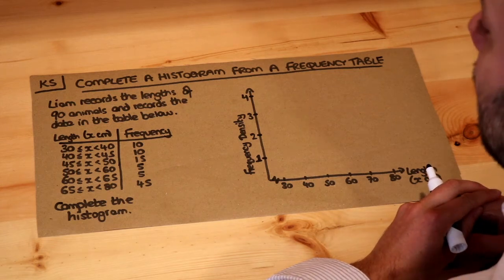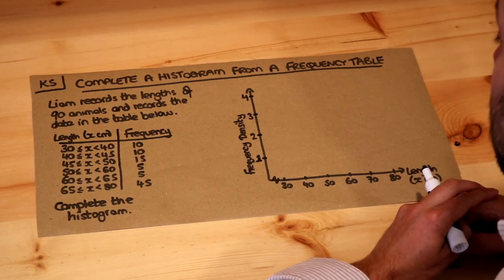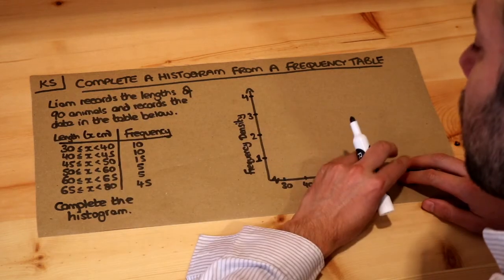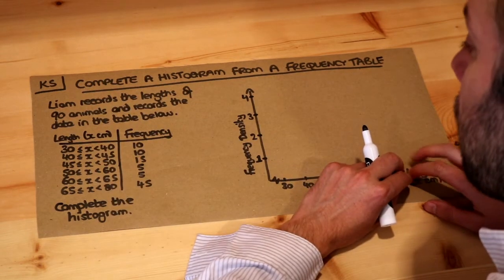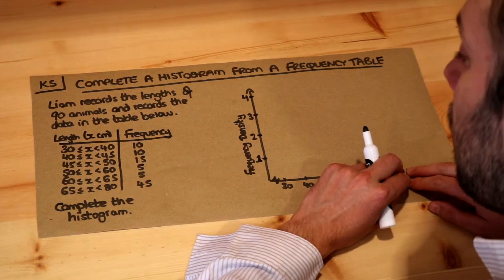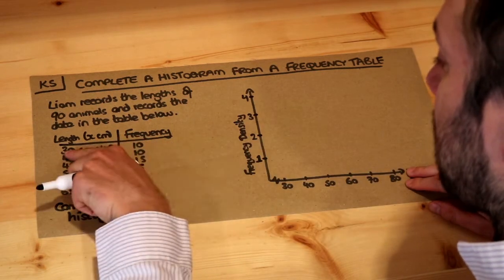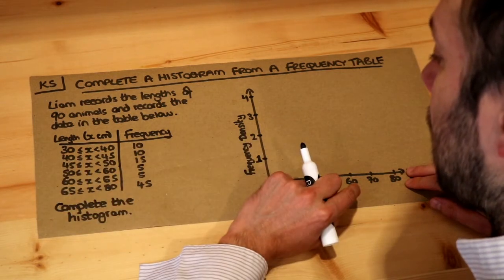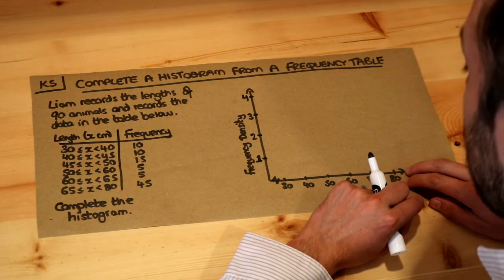Hello and welcome to Dr Ross Mass's key skill video on completing a histogram from a frequency table. Let's read the question. Liam records the length of 90 animals and records the data in the table below. So we've got 10 animals with a length between 30 and 40 centimetres, 10 animals with a length between 40 and 45 centimetres, etc., and we want to complete the histogram.